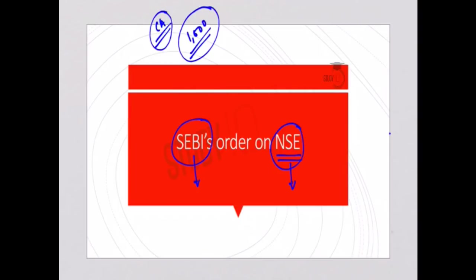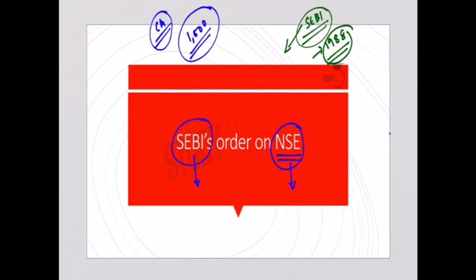SEBI — Securities and Exchange Board of India — is a government-established authority which started in 1988 and it controls the security market in India. The Indian Parliament passed the SEBI Act of 1992, and therefore SEBI is a statutory body, meaning it derives its authority from an Act of Parliament.